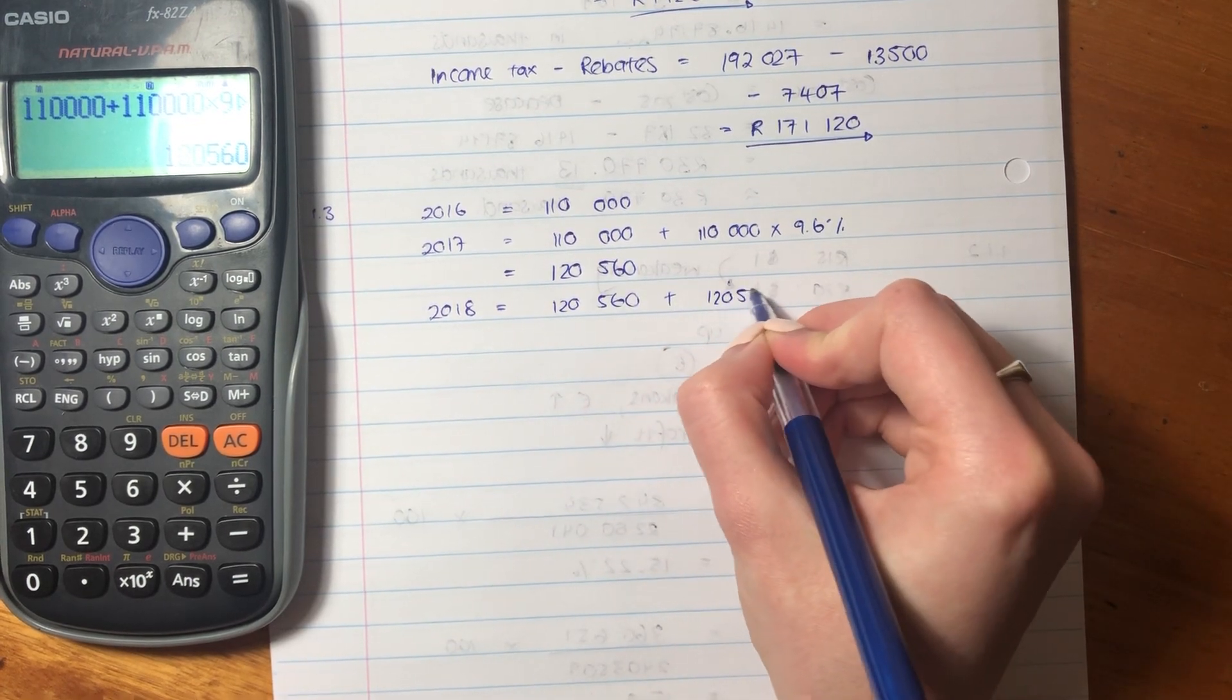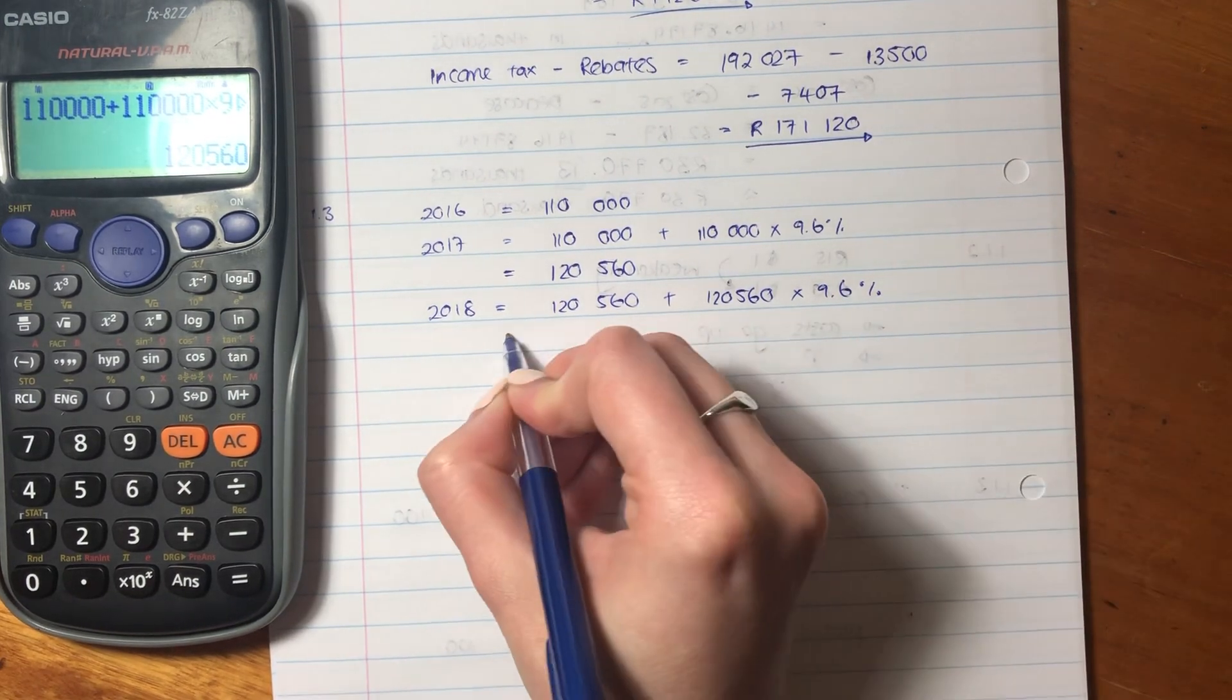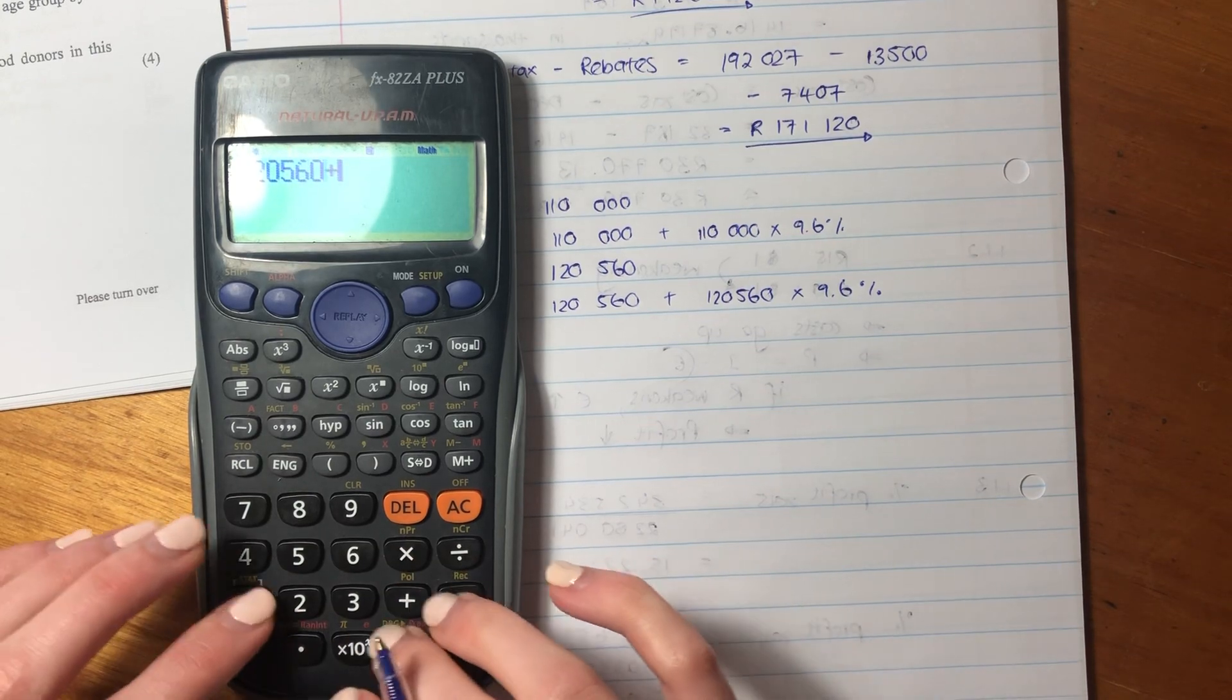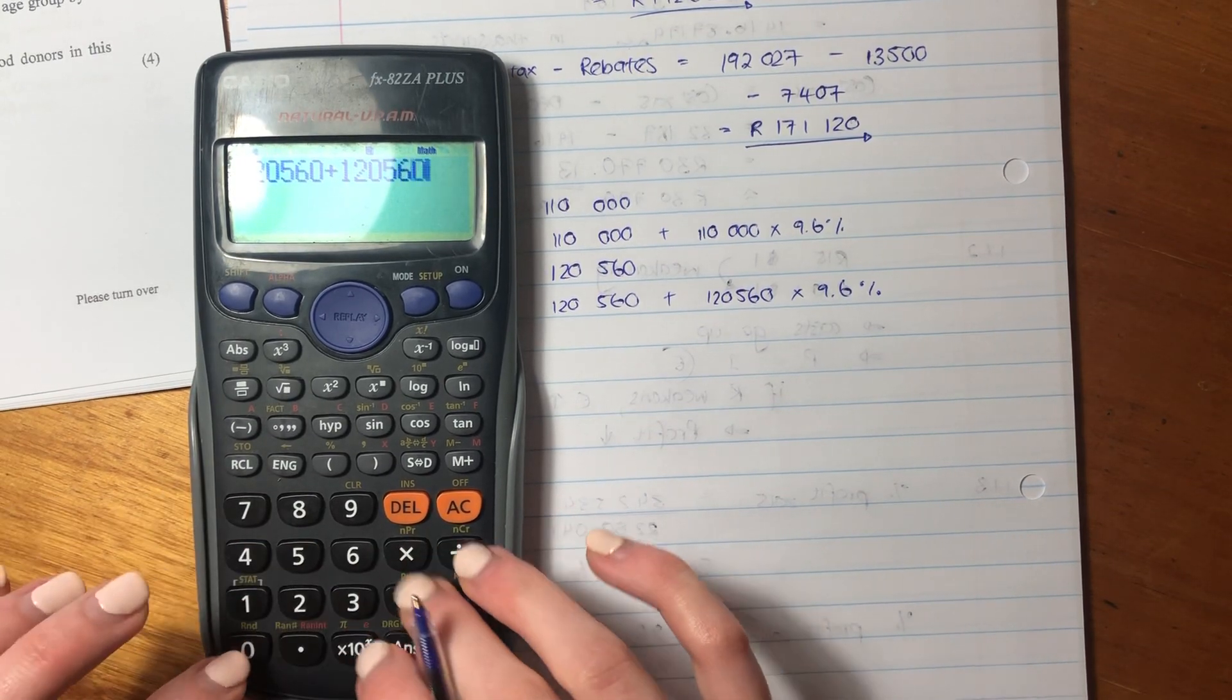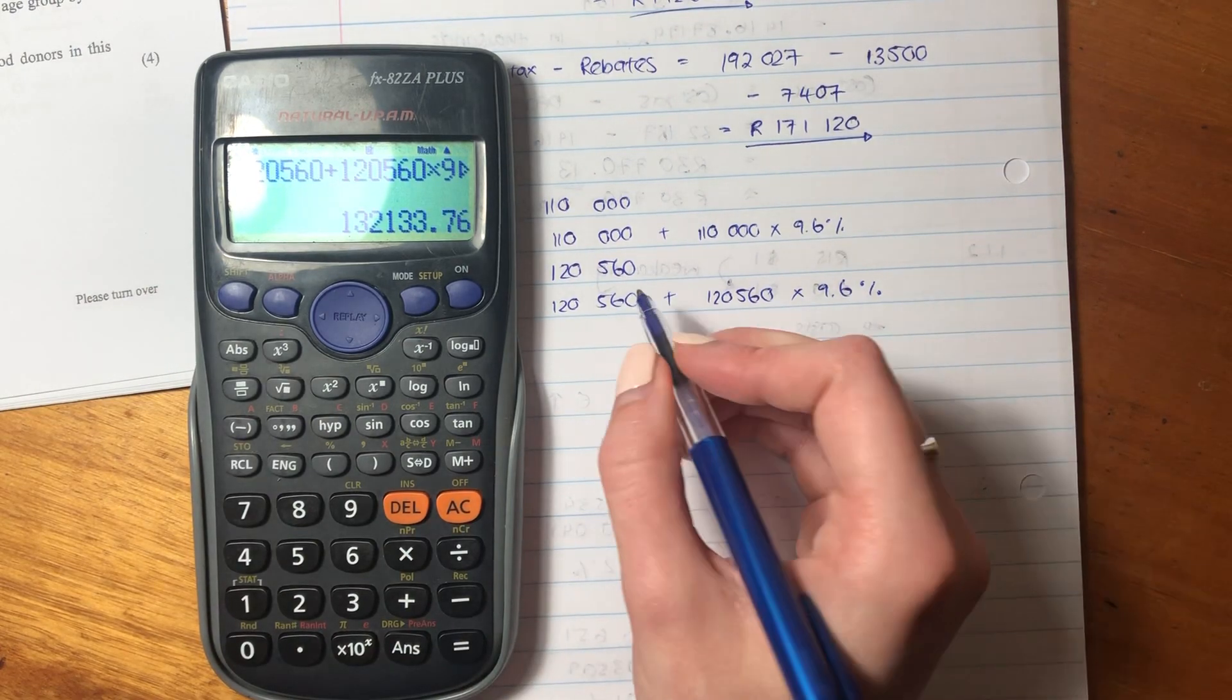And then we want to increase that amount by, again, 9.6%, right? So let's put that into our calculator. 120,560 times 9.6%.